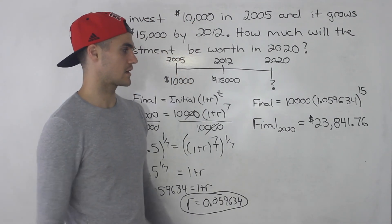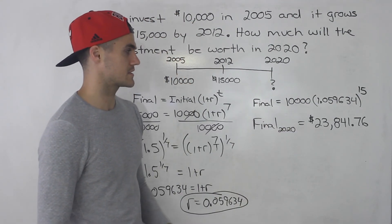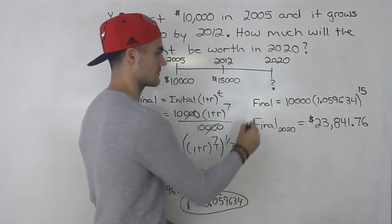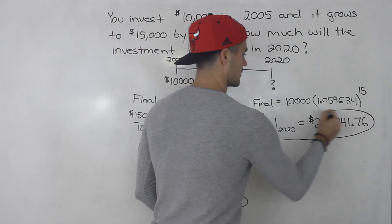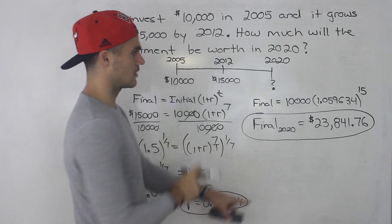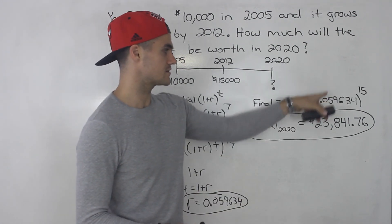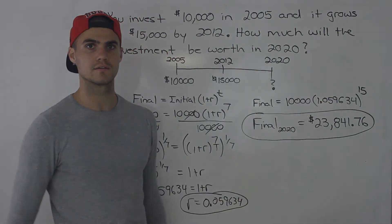And when you do that in your calculator you end up getting that amount there, $23,841.76. So if you invest $10,000 at that rate for 15 years, that is the amount you end up with.